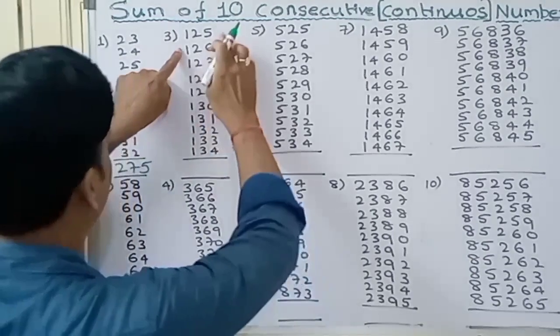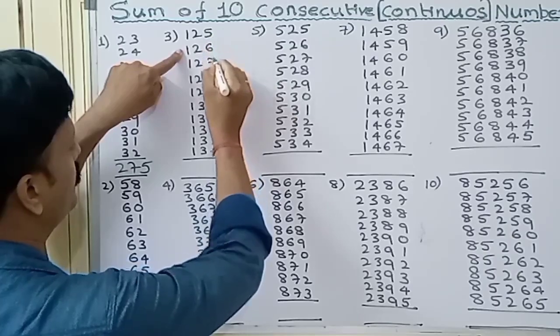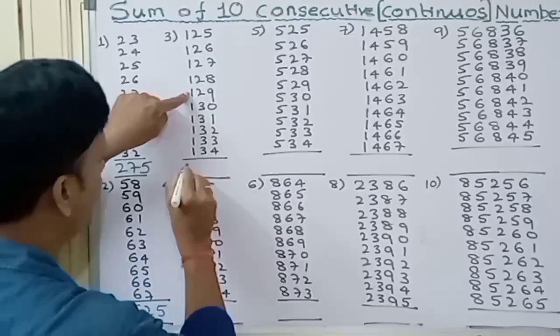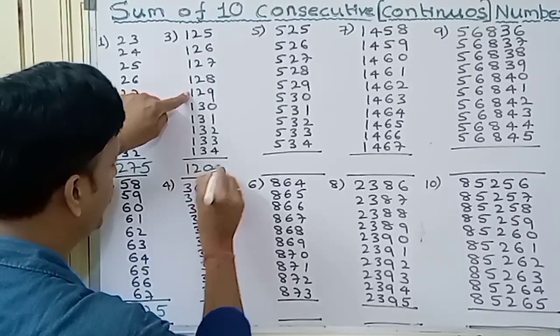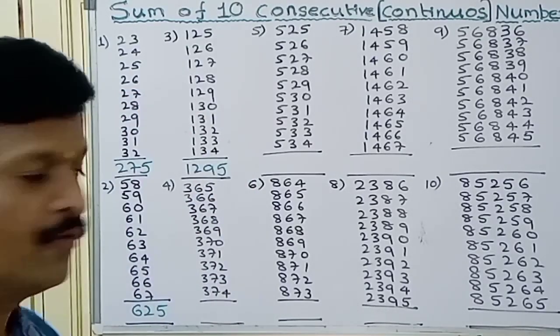Next, the third question, 125 to 134. Let's count 1, 2, 3, 4, 5. 129 and 5. Write down 1295, the sum of the numbers from 125 to 134.